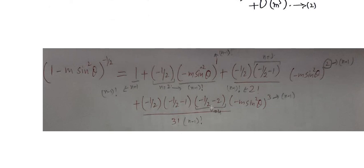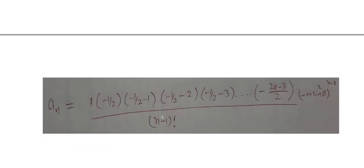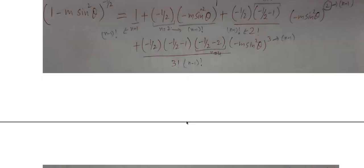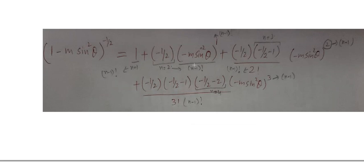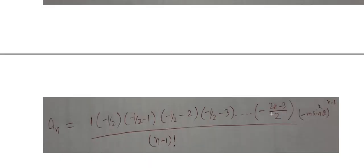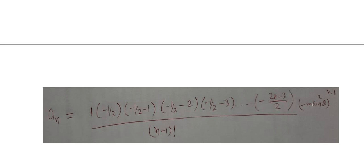For the denominator: the first term has zero factorial, the second has one factorial, the third has two factorial, the fourth has three factorial, so the nth term has (n−1)! in the denominator. For the power of (−m sin²θ): it is 0, then 1, then 2, then 3, so the general nth term has power (n−1).